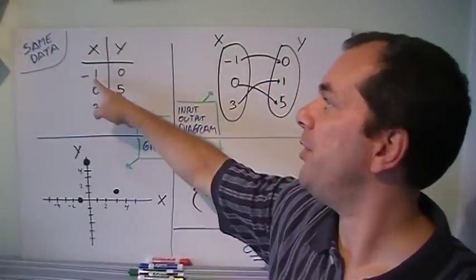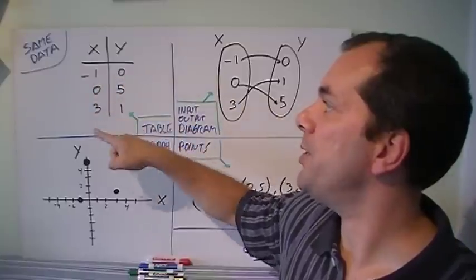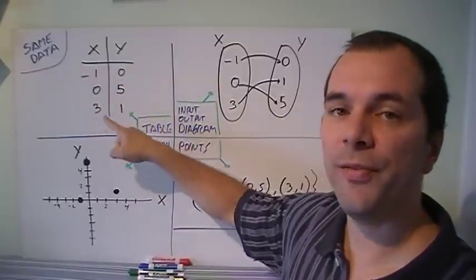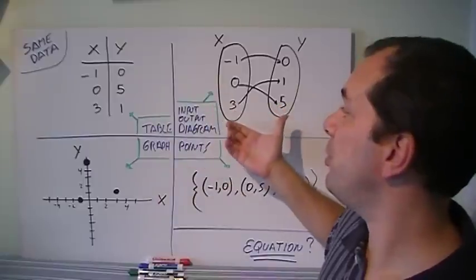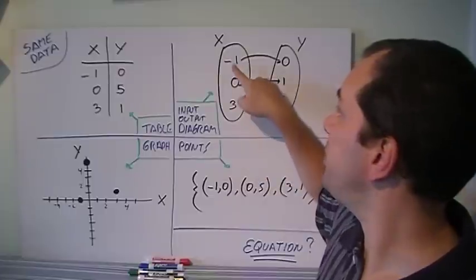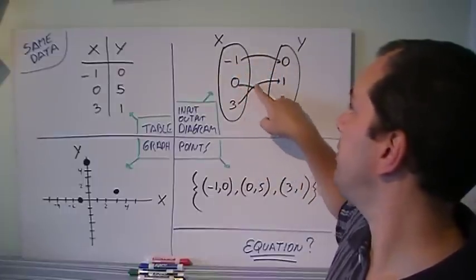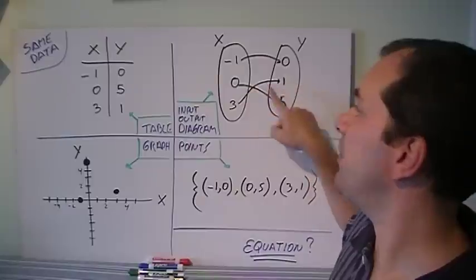This is the table of values and I say when x is minus 1, y is 0. When x is 0, y is 5. And when x is 3, y is 1. In the same way, I could have used an input and output diagram like this one and say minus 1 gives me 0, 0 gives me 5, 3 gives me 1.